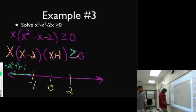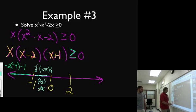How about let's pick a number in between here. Like negative one-half. So we'll have negative one-half times negative two-and-a-half times one-half. Negative times negative is positive times a positive is positive. So this is good. We want to keep that part.